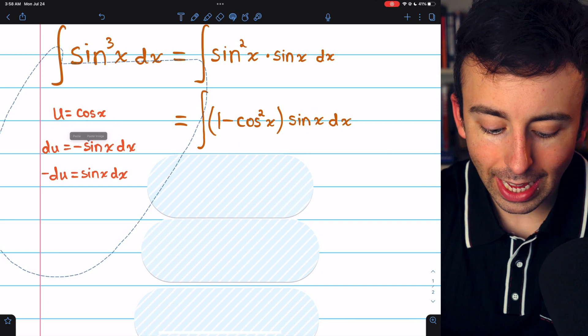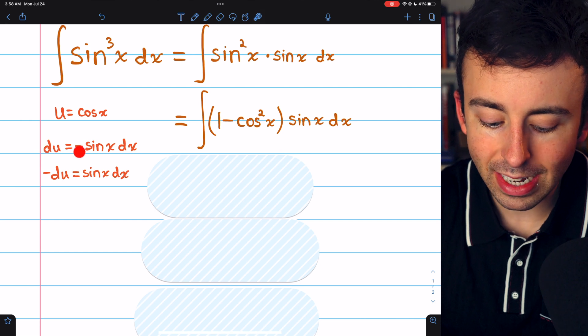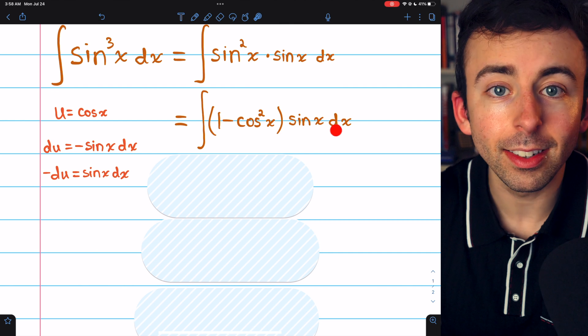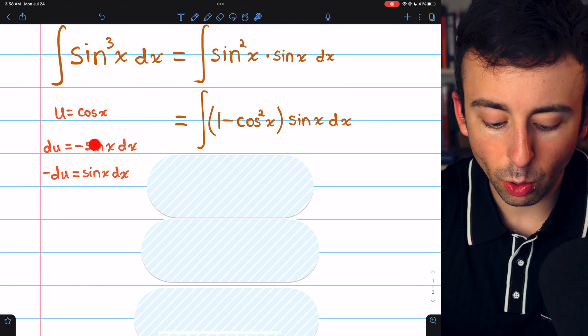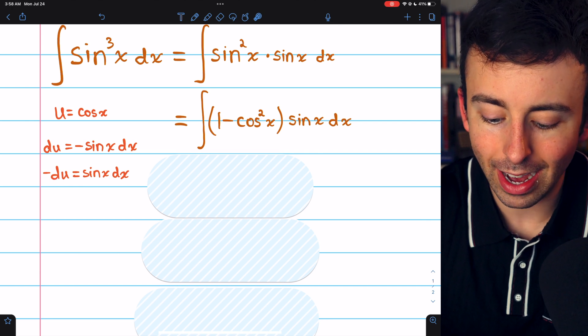Then we can let u equal cosine. If we do that, then du equals negative sine x dx. We want sine x dx, so just multiply both sides of this equation by negative one to get negative du equals sine x dx.